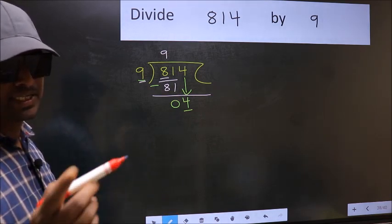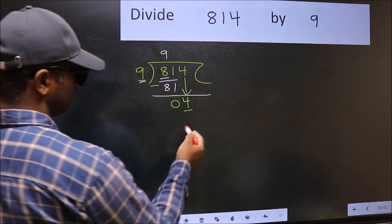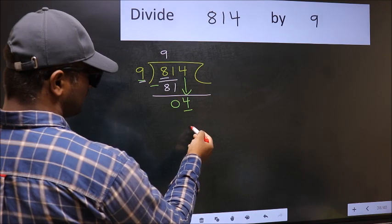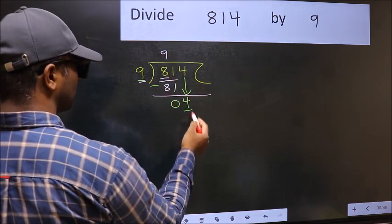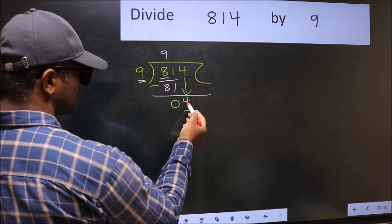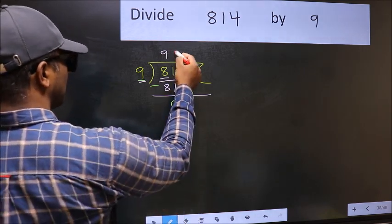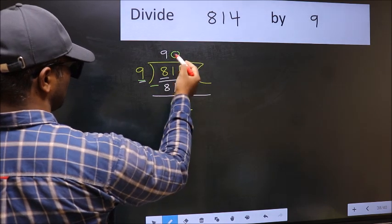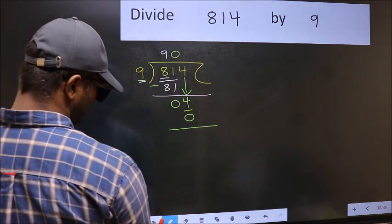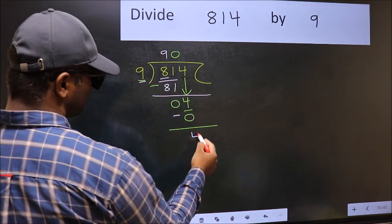Instead, what you should think of doing is which number should we take here. If I take 1, we will get 9, but 9 is larger than 4. So what we should do is we should take 0. So 9 into 0, 0. Now we should subtract. 4 minus 0, 4.